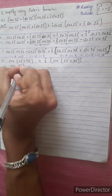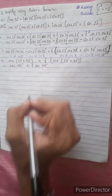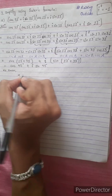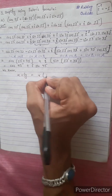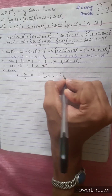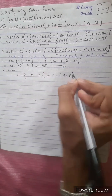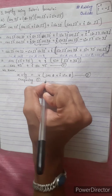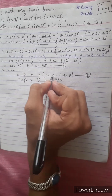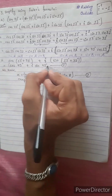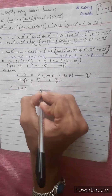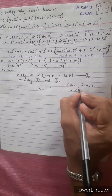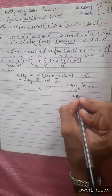cos 45 plus i sin 45. This is the same thing we know. x plus iy equals to r (cos theta plus i sin theta). We know this equation — comparing, theta is 45°, r equals 1. We know this formula: r·e^(i theta).